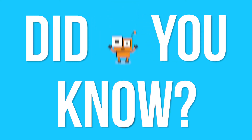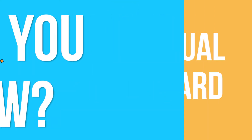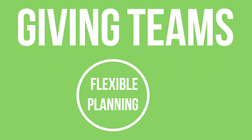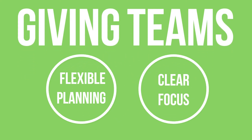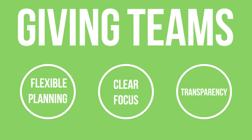Did you know? The Kanban control is a visual board used to manage the flow of work, giving teams flexible planning options, clear focus, and transparency throughout the development cycle.